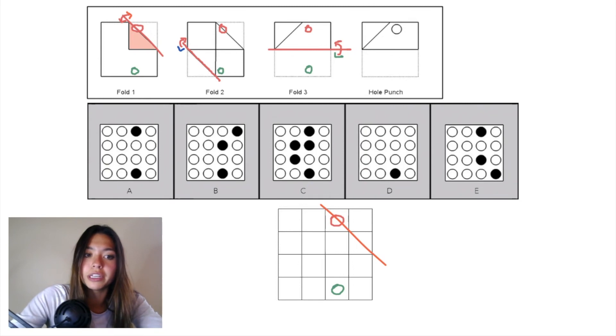If I drew that same diagonal plane in our grid, you can see how this hole punch, when we undo that fold, you'd just be filling in that other half. So we're not adding any new hole punches in fold one either.